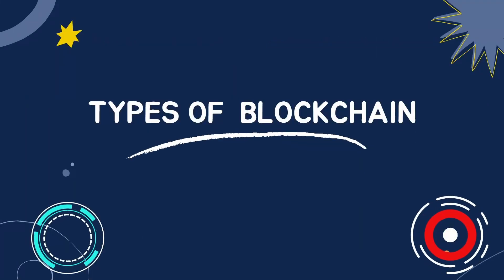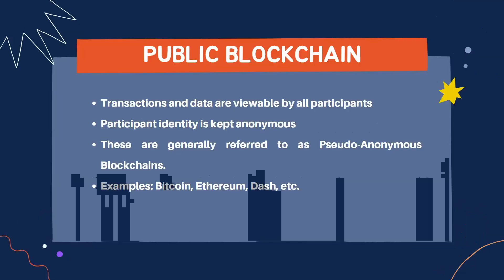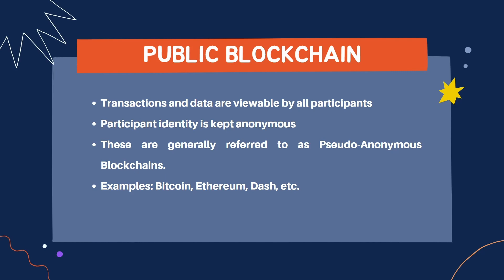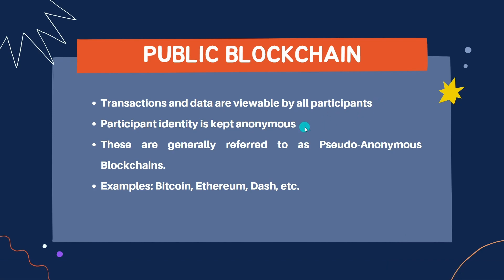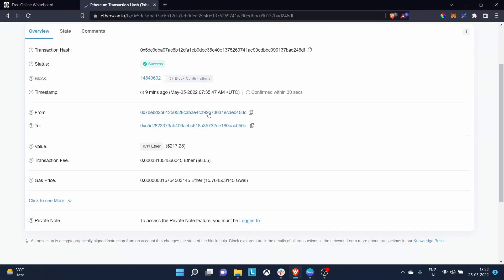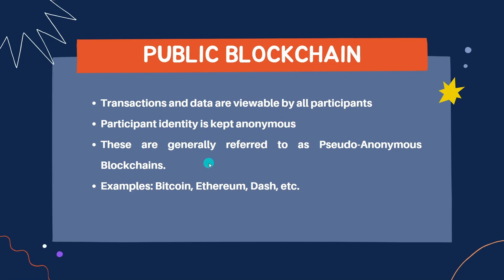Now let's see the types of blockchain. The first one is public blockchain. Transactions and data are viewable by all participants — as we saw in the Etherscan example. Participant identity is kept anonymous: we saw the wallet address but don't know who it belongs to, since there are no KYC requirements. This is why these are referred to as pseudo-anonymous blockchains — we know the wallet address exists and can track its transactions, but we don't know who it belongs to. Examples are Bitcoin, Ethereum, Dash, and many more.